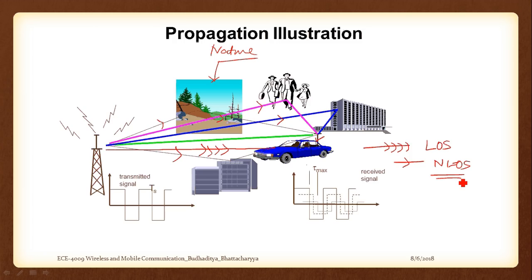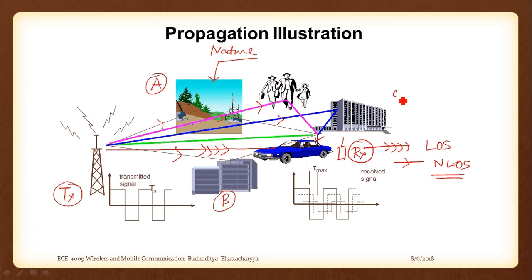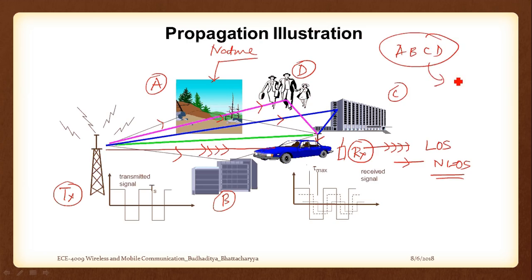Receiving multiple copies is a problem because if our device is not good enough to distinguish between the desired signal and noise, it will try to amplify the noise itself. We know what the transmitter and receiver are — those are user-built things — but the intermediate components like the obstacles (a, b, c, d) are all unknown. We cannot demolish a building or a hilly terrain just to improve signal quality, so these unknowns need to be fitted into some model.